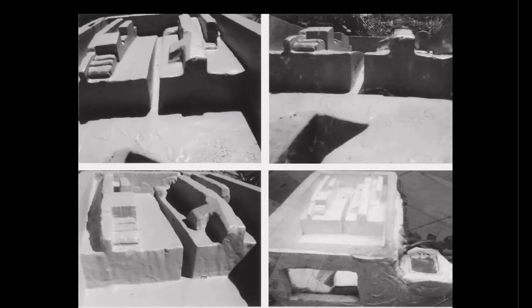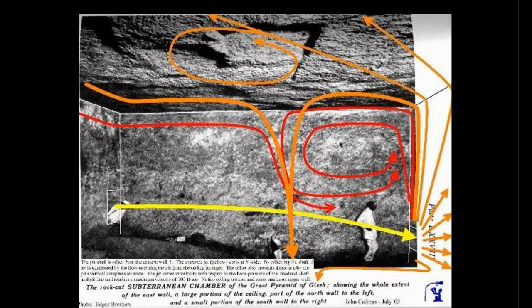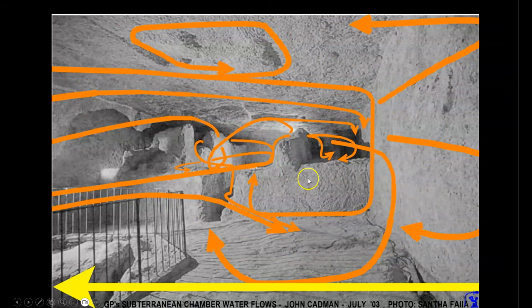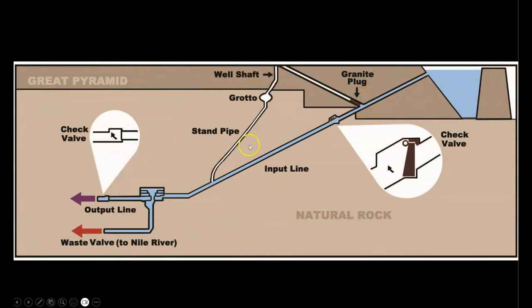Second, what appears to be an unfinished western half of the chamber may be much more sophisticated and precisely engineered to promote specific fluid dynamics within the chamber. This brings me to the work of John Cadman, who has proposed that the subterranean chamber is a ram pump that produces complex fluid dynamics and pressures within the system. This system pumps water out of the subterranean chamber through a proposed outlet line connected to the dead-end shaft, with the pit functioning as a waste valve distributing water back to the Nile River.